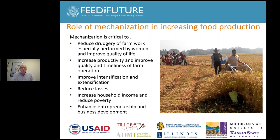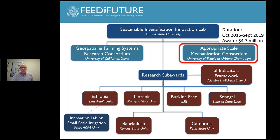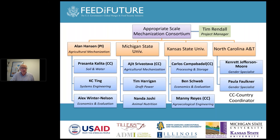We fall under the Sustainable Intensification Innovation Lab based at Kansas State University. We are a consortium under that lab — one of two, the other being a geospatial one — and there are research sub-awards involved in six different developing countries, plus groups dealing with the indicators framework and small-scale irrigation. We got started in October 2015; it's a four-year project, so we have just over two years to go.